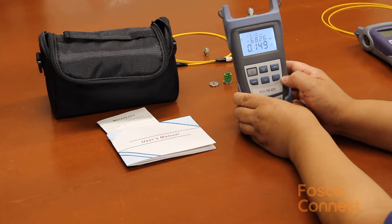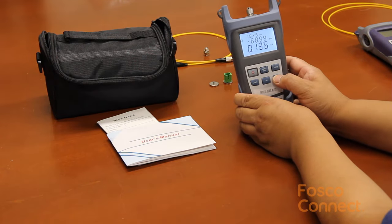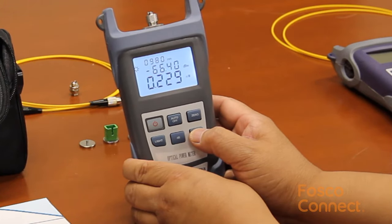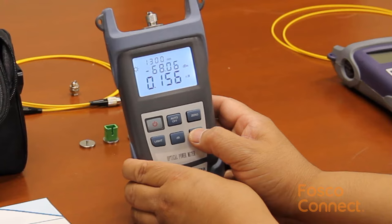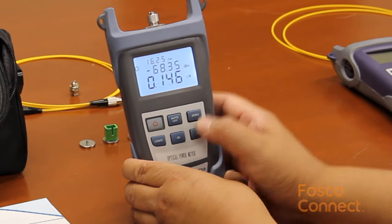This power meter is pre-calibrated to seven most common wavelengths: 850 nanometer, 980 nanometer, 1300 nanometer, 1310 nanometer, 1490 nanometer, 1550 nanometer, and 1625 nanometer.